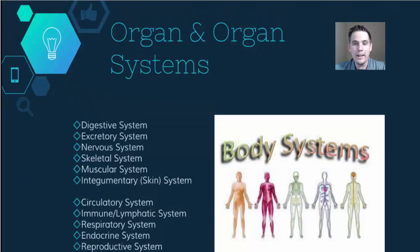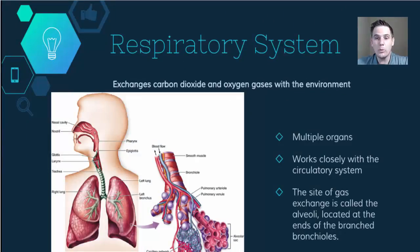There are many, many different organ systems — the digestive system, the excretory, the nervous, and all the systems you see on the screen. In this video, we're not going to spend a lot of time talking about all the different kinds of organ systems, but just know that there are many working in your body all at the same time and often interacting with each other.